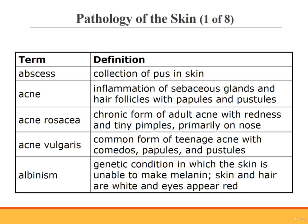Let's move on to pathology terms specific to the skin. An abscess is a collection of pus under the skin. Acne is an inflammatory disease of the sebaceous glands and hair follicles that results in papules and pustules. There are two types of acne. Acne rosacea is a chronic form of adult acne that involves redness, tiny pimples, and broken blood vessels, primarily on the nose and cheeks. Acne vulgaris is a common form of acne seen in teenagers, characterized by comedos, papules, and pustules.